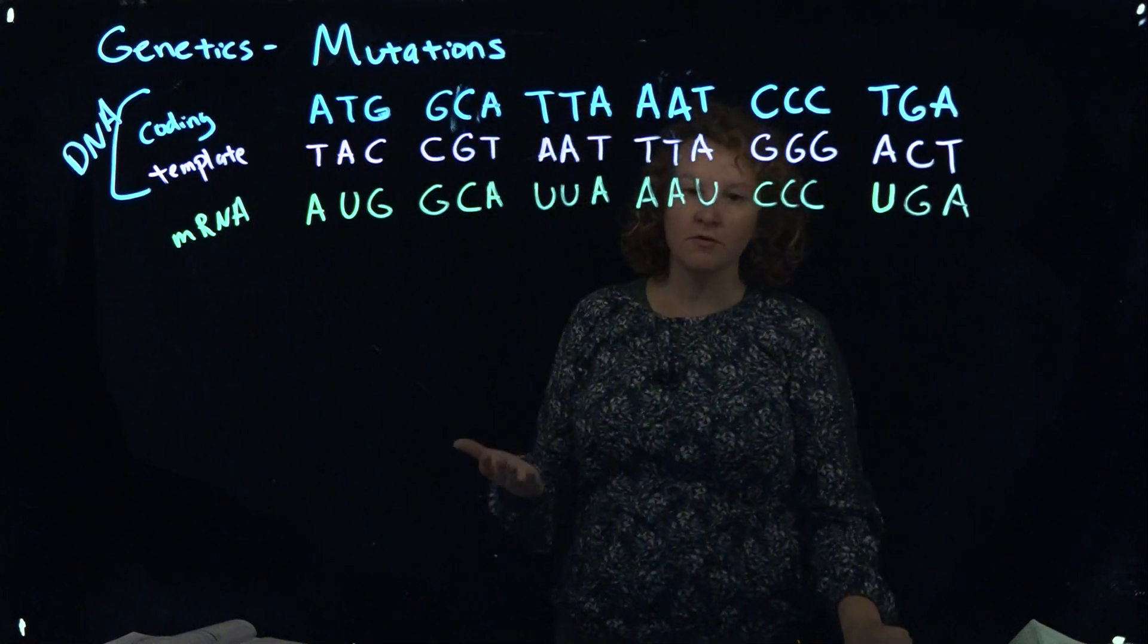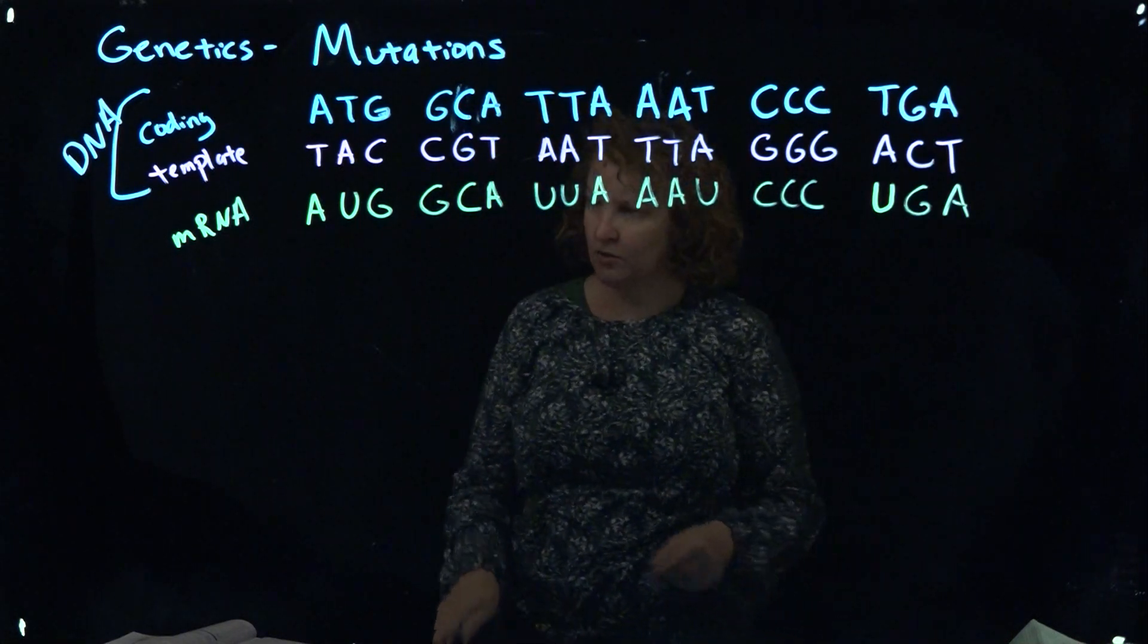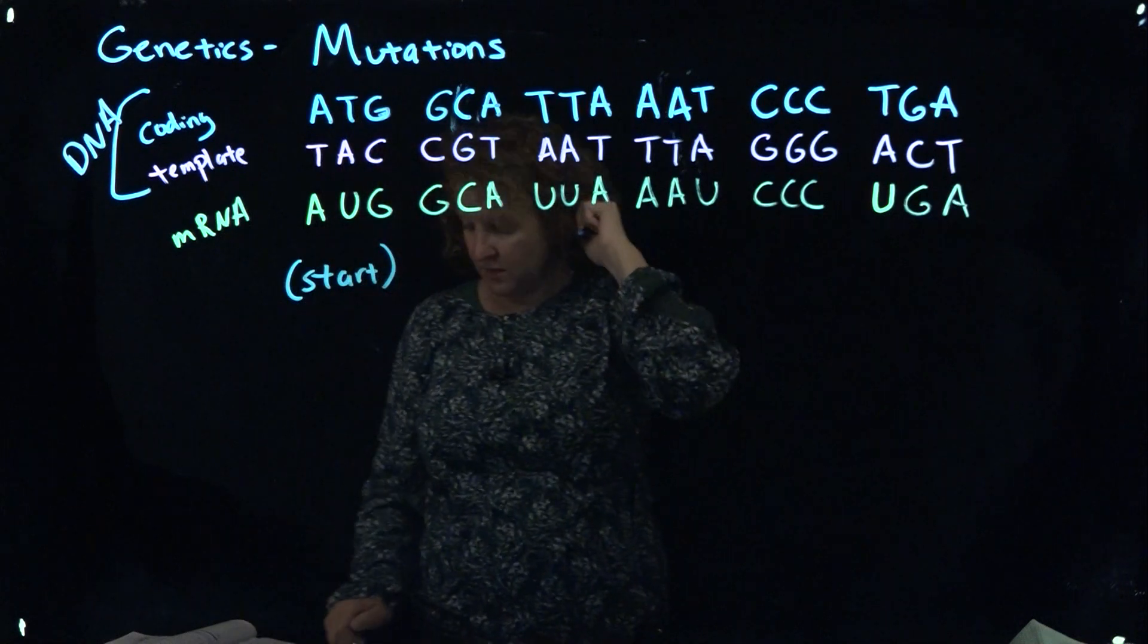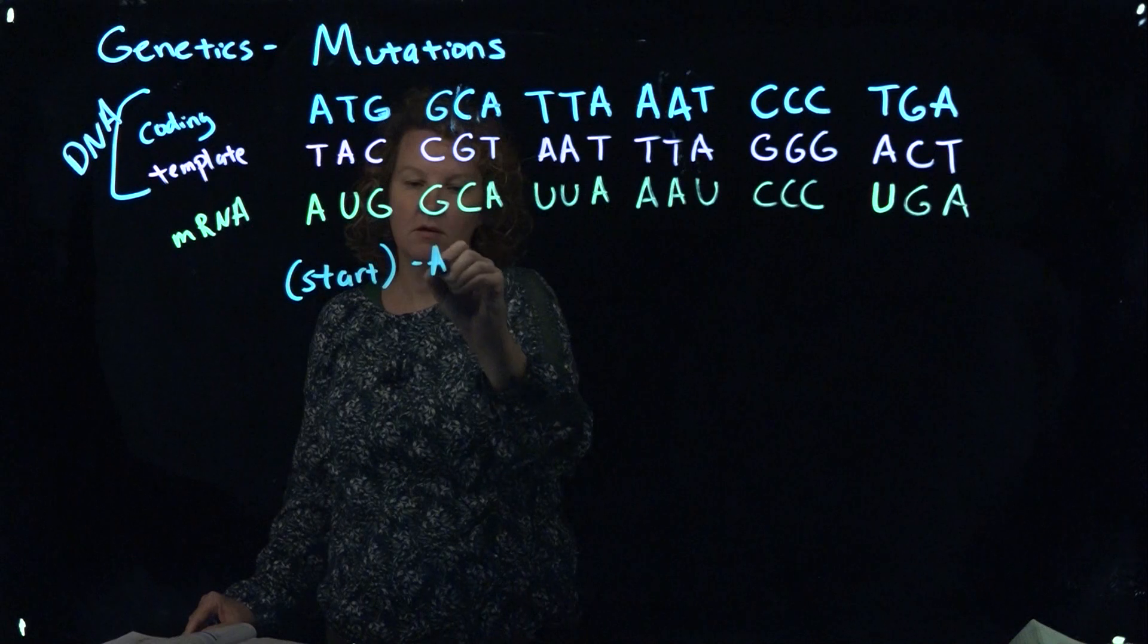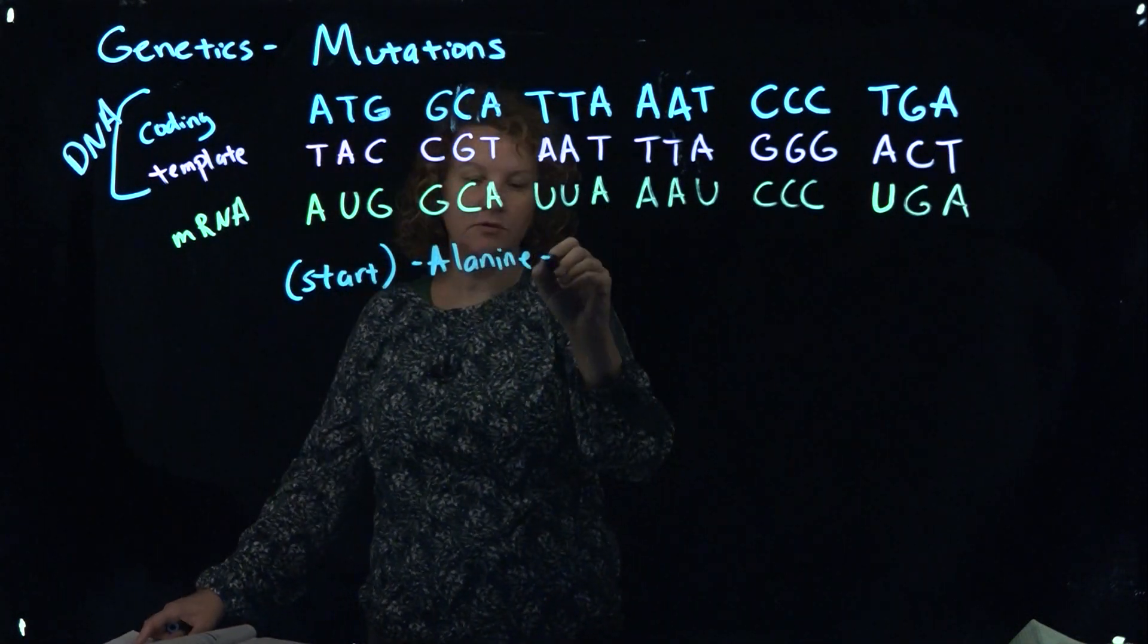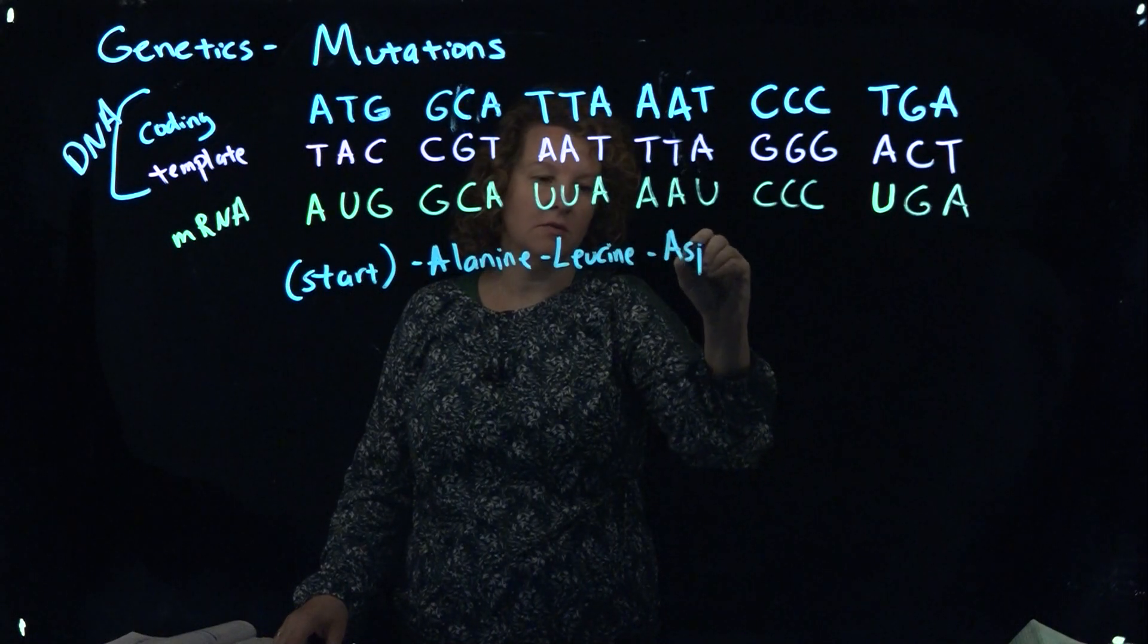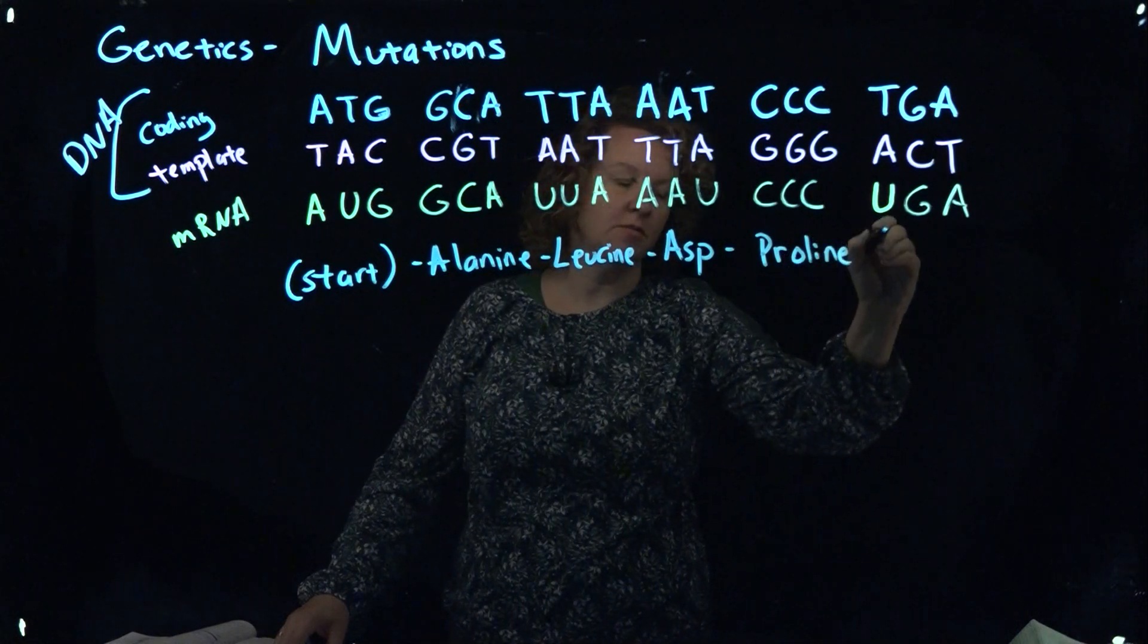Cytosine and guanine are paired together. I can look to see how I would code these. If all is well, this should come out being a start codon AUG. Then GCA should be alanine, UUA would be leucine, followed by asparagine. I'm going to abbreviate here, I'm going to run out of space. And proline and then a stop at the end.